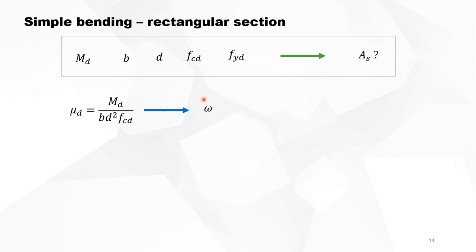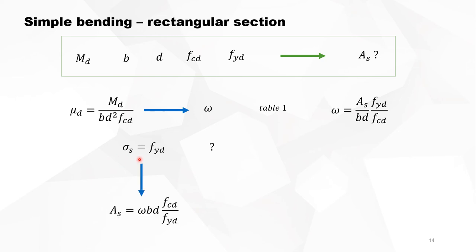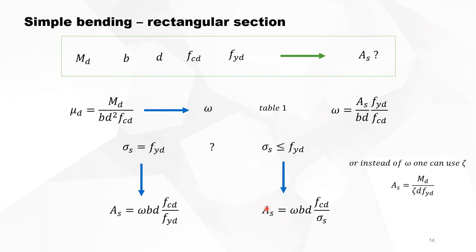There are two ways to calculate the reinforcement. You can use omega — the mechanical reinforcement ratio — using table 1. With µD you read omega from the table and check whether sigma_s is yielding. If yielding, use the formula to extract As. If sigma_s is not yielding, As equals another formula but you need to know sigma_s. Alternatively, I prefer to work with zeta: it's the same table, but the formula is simply the bending moment divided by lever arm and maximum yield stress of steel.